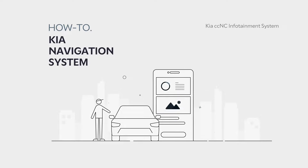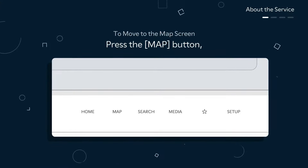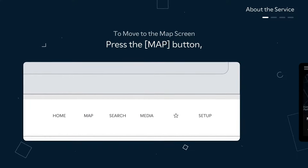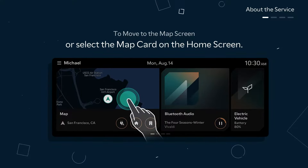Let me introduce you to Kia Navigation Service, which can help provide a safer and more accurate driving experience. To access the map screen, simply press the hard map button located below the infotainment screen. Or press the map card on the home screen to quickly move to the map.